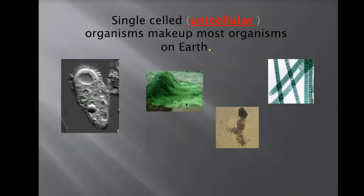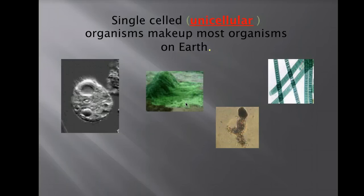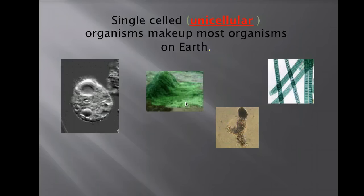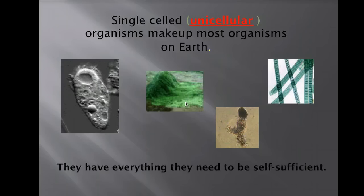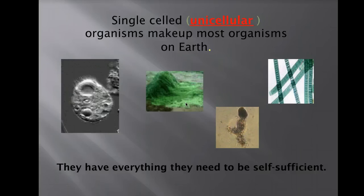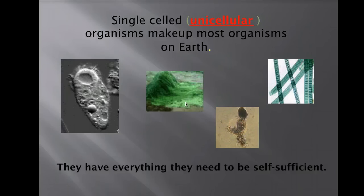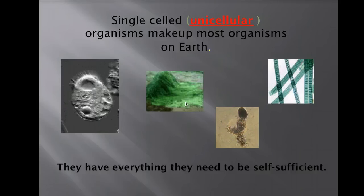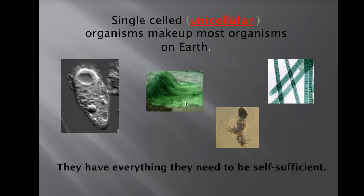Single-cell organisms are what we call unicellular, and they actually make up most of the organisms on Earth. In that one cell they will have everything that they need to be self-sufficient and survive — everything they need for movement, getting food, transportation, breathing — all of those things, all in one cell.